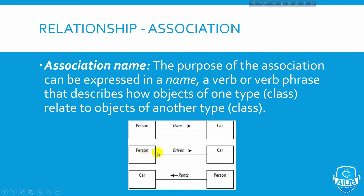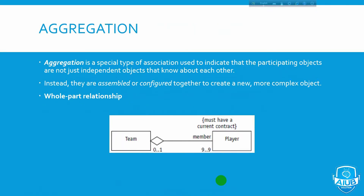It's an association: a person and a car. If you have a person that drives a car, you can use the verb phrase 'drives'. A person drives a car — that is what you call an association. This is a very good example of a verb phrase describing an association.